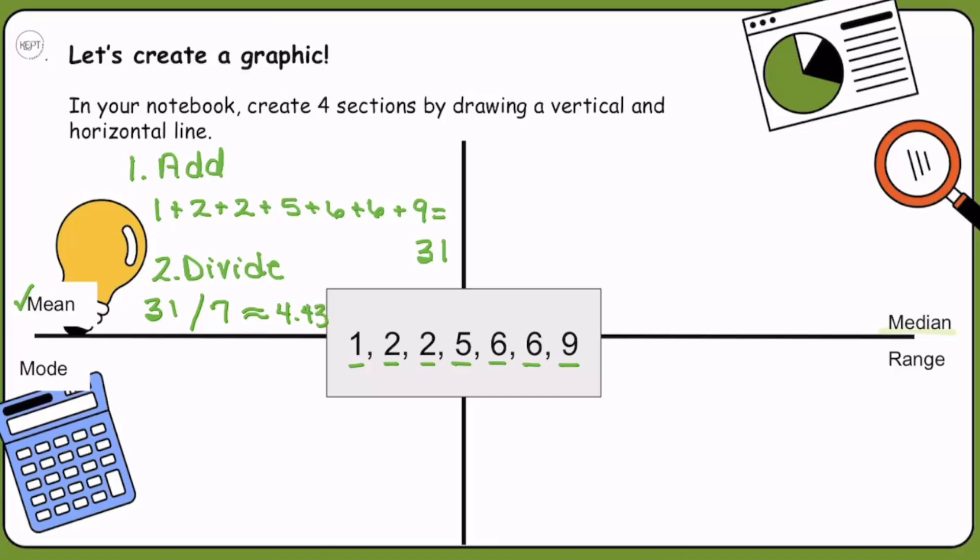Let's continue with the median. Remember, the median is once we have the numbers lined up in order from least to greatest, we find the number that is in the middle. Let's write our numbers out: 1, 2, 2, 5, 6, 6, 9. They are in order from least to greatest. Now we just find that middle number. We're going to mark these out: the least, the greatest; the least, the greatest; the least, the greatest. Our median is 5.